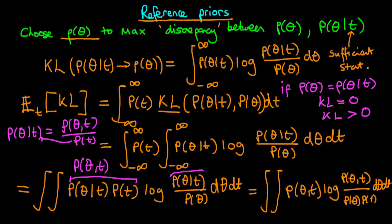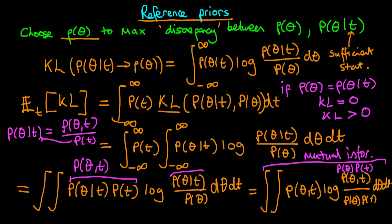Why have I done all this manipulation? The idea is that this quantity actually has a meaning — this is what's known as the mutual information between theta and T. The mutual information is a measure of dependence between the two variables. If theta and T are independent, then the numerator of this expression just becomes P of theta times P of T, which exactly cancels with the denominator, meaning you get log of one — in other words, the mutual information is zero. That makes sense because if the variables are independent, knowing the value of one does not help you predict the value of the other, and hence the mutual information is zero.